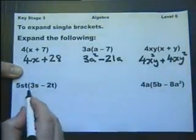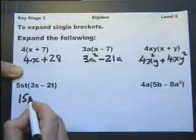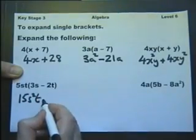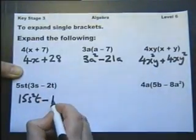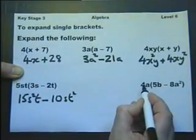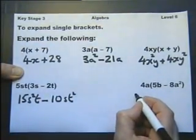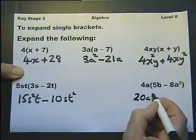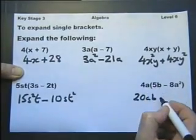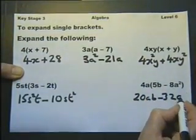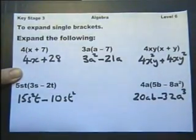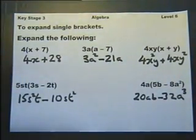4xy times y. 5st times 3s. 5 times 3 is 15. The s times the s will be s squared. 5st times minus 2t. 5 times 2 is 10. S, t squared. 4a, 4 times 5 is 20, 4ab. 4a multiplied by this, 4 times that is minus 32. 2a times a squared is a cubed. Expanding brackets—multiply anything inside by what's outside.